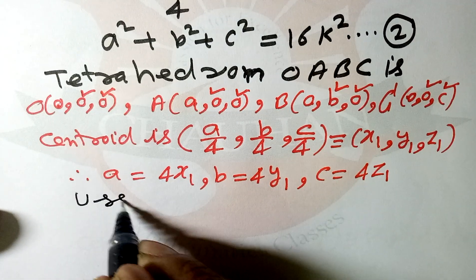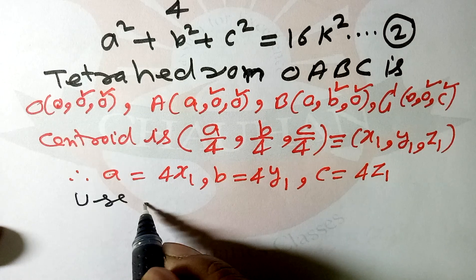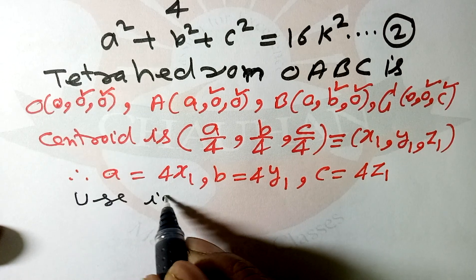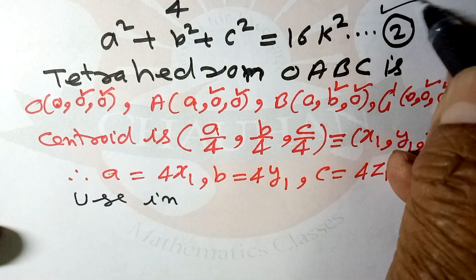We use these values of A, B, C in equation number 2. Substituting: A² = 16x1², B² = 16y1², C² = 16z1² equals 16k². Dividing both sides by 16, the locus of (x1, y1, z1) is x² + y² + z² = k².